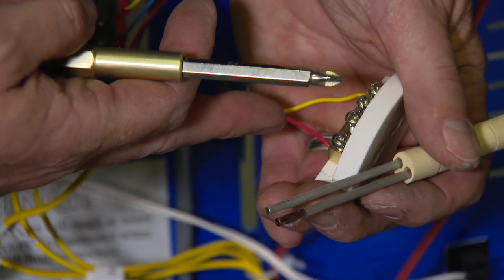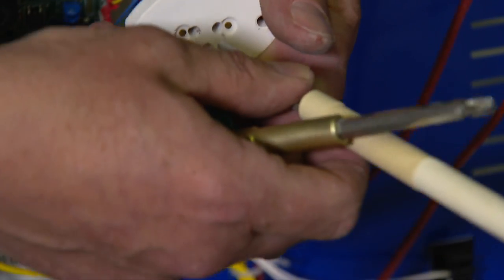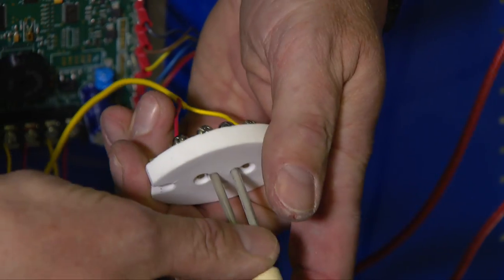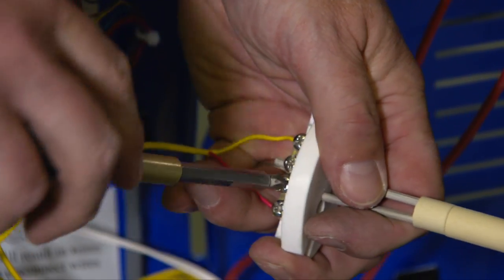Take your new thermocouple, noticing that there's a red painted tip that needs to line up with the red wire on the thermocouple block. Put it in place and secure the two Phillips screws.